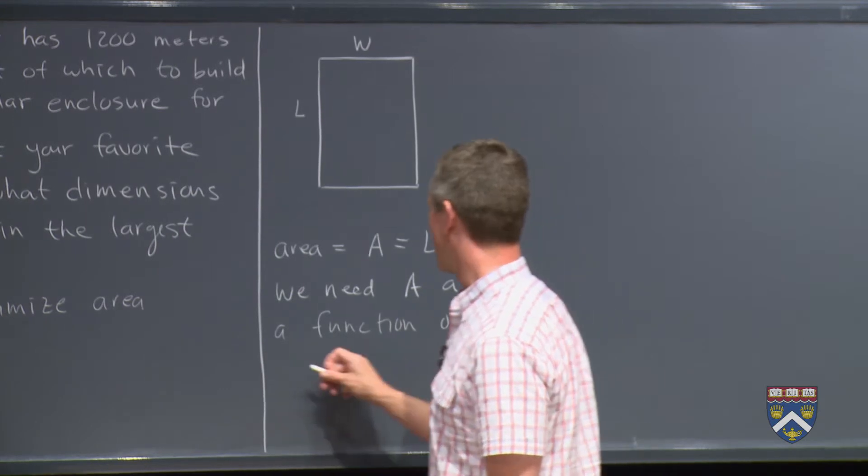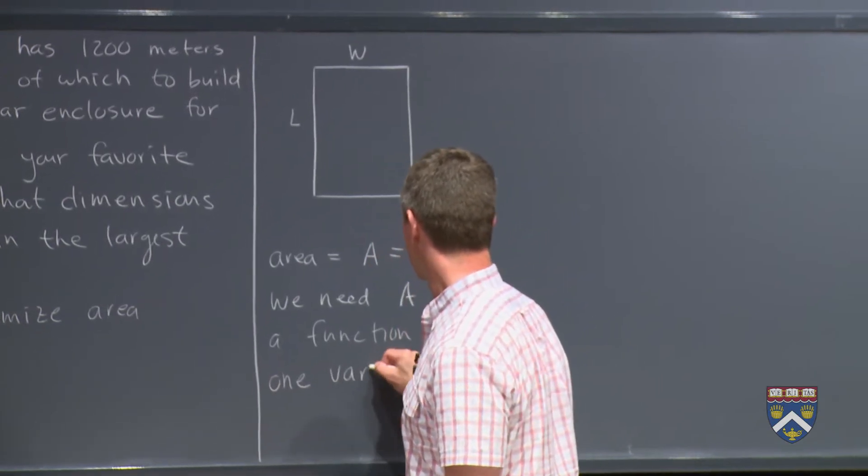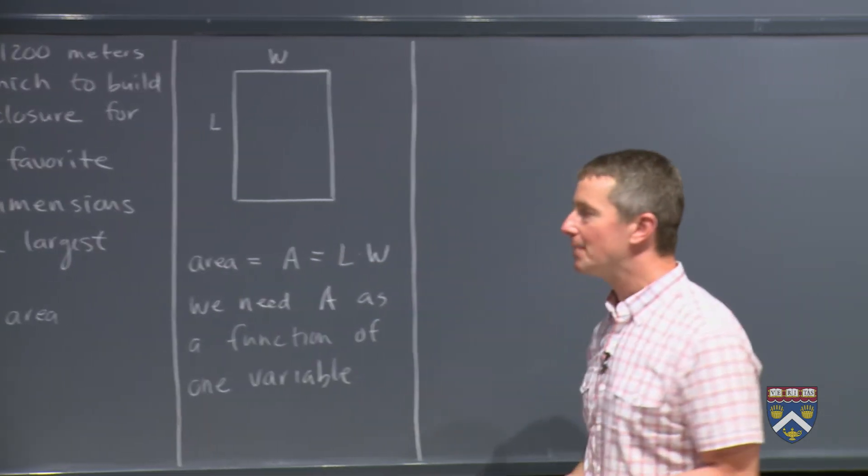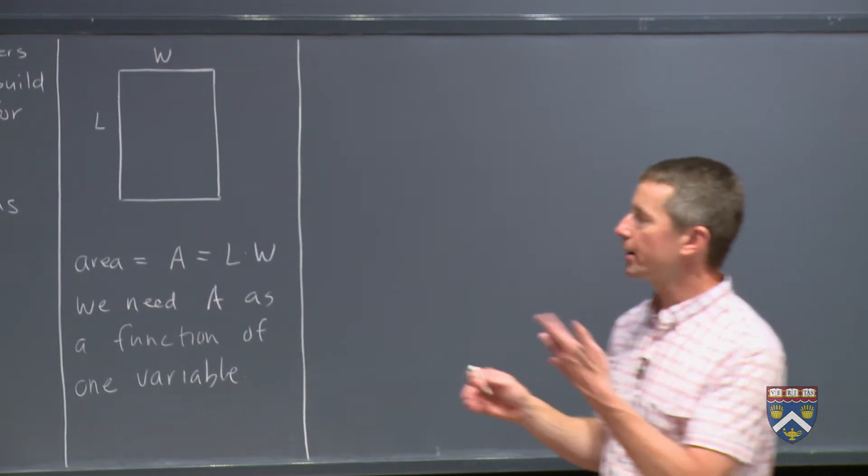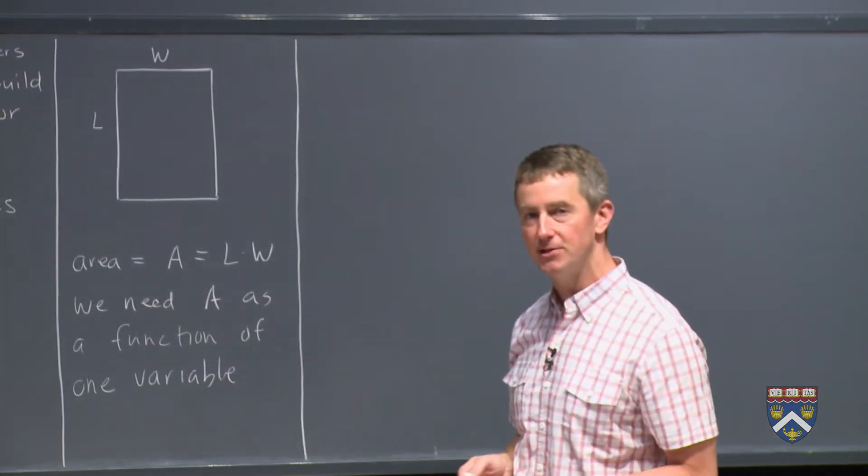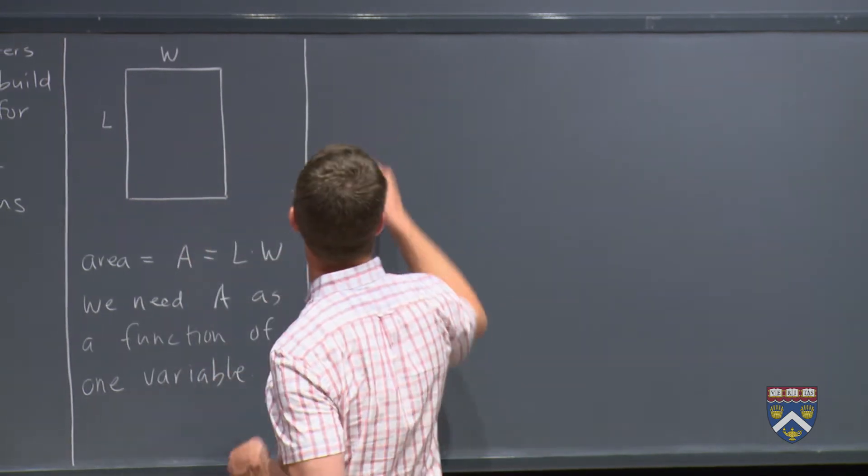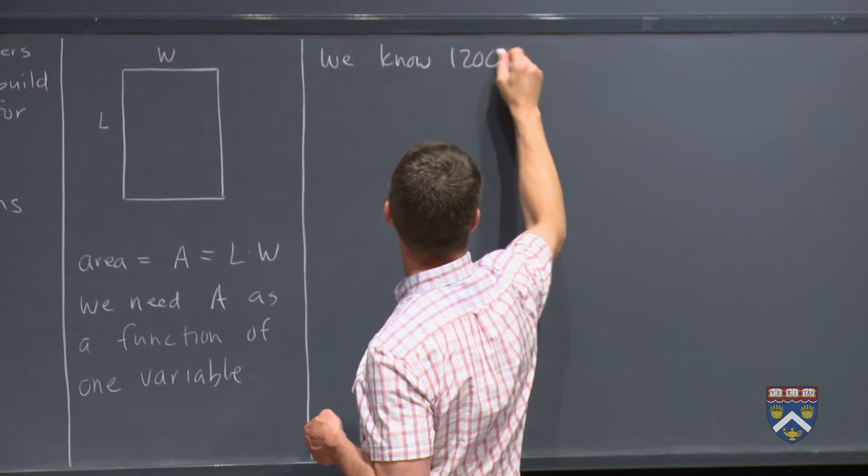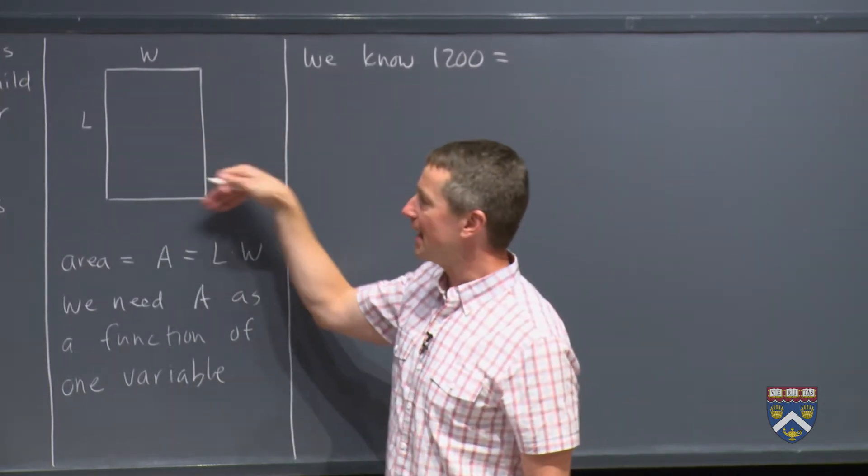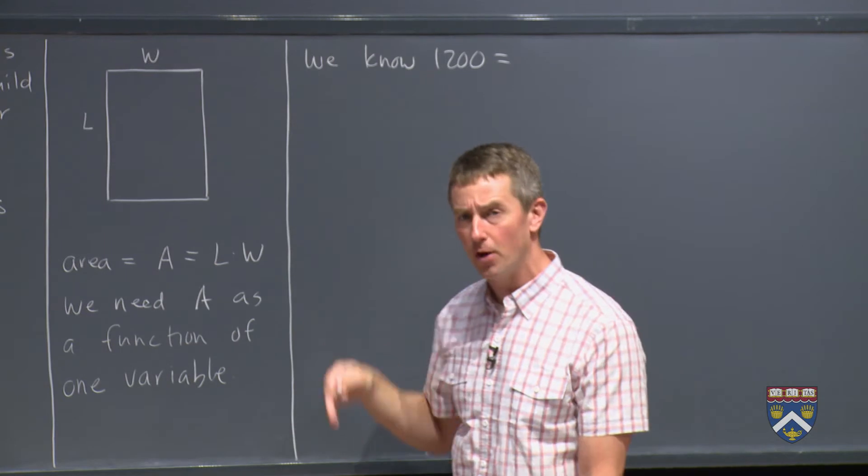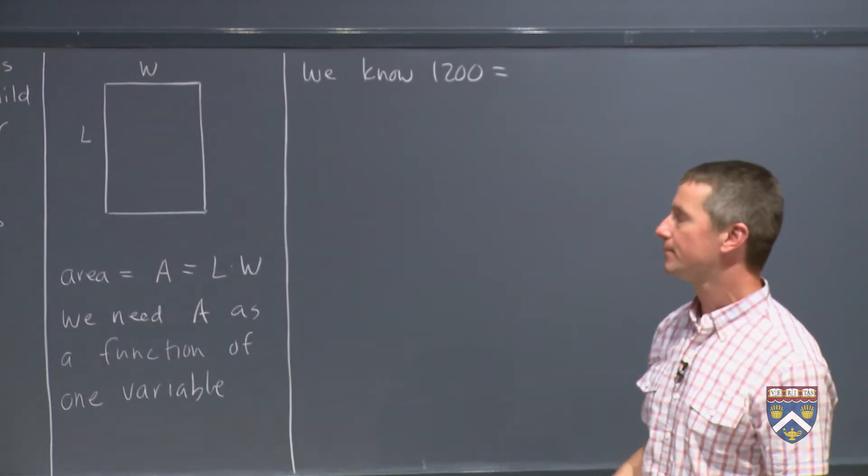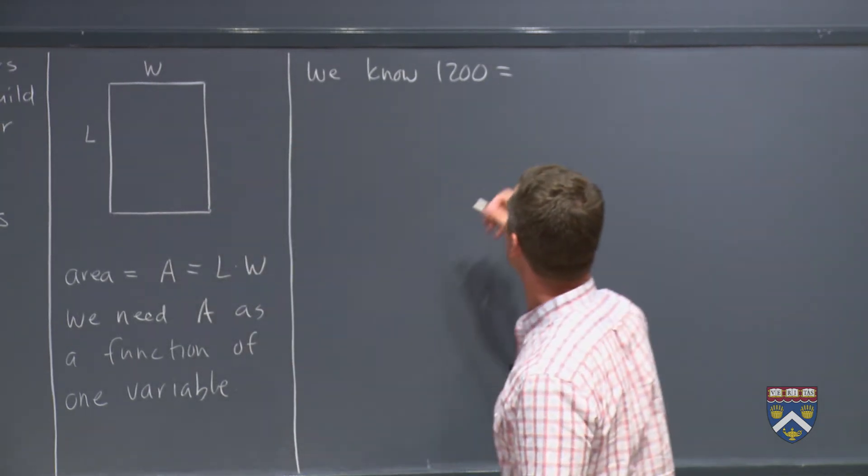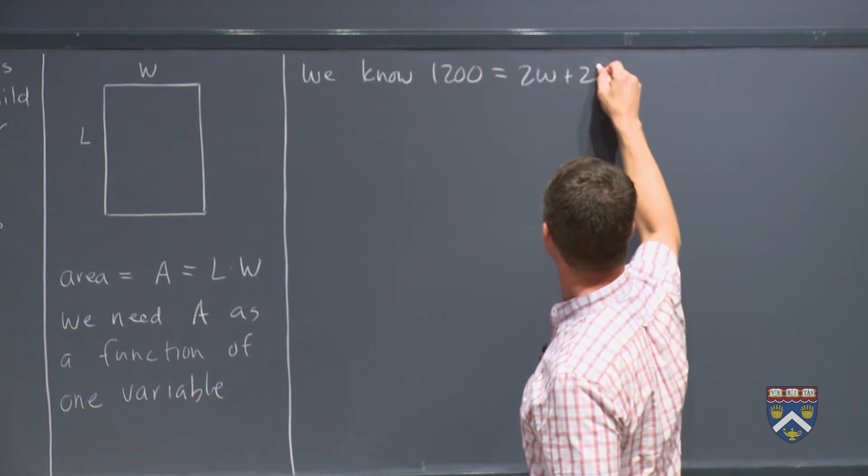And this is going to be the pattern in virtually all of these problems. So that means there must be some other information in the problem that we know that we haven't used yet. So at this point we should go back and look at what other information there is. In this case the information is the 1200 meters. So we also know that 1200 is going to be the total amount of fence that's used. So we should be able to write a formula that involves W and L in 1200. And in fact what is it? It's W plus L plus another W plus another L. So it's 2W plus 2L.